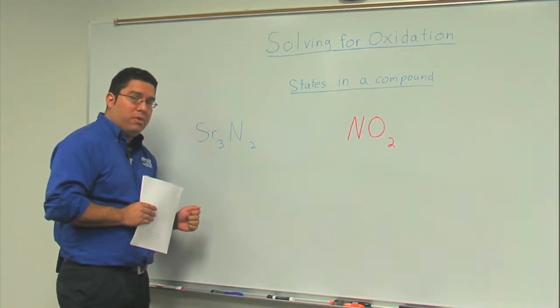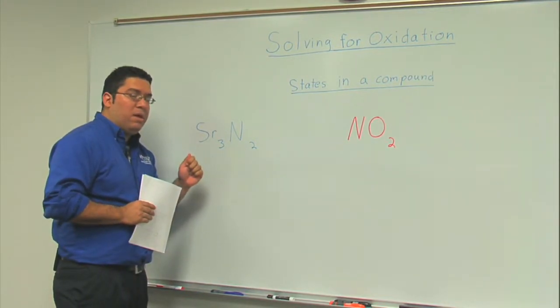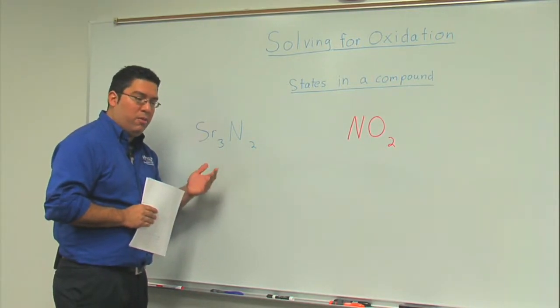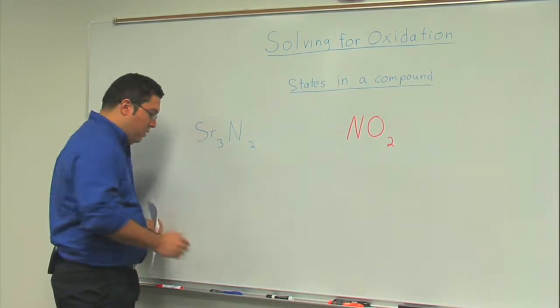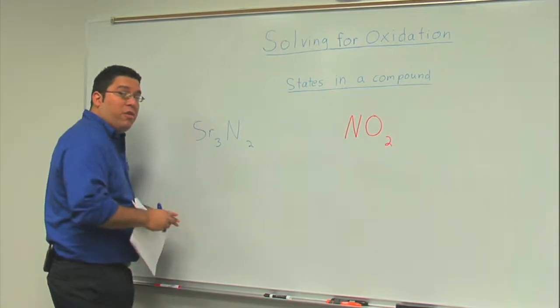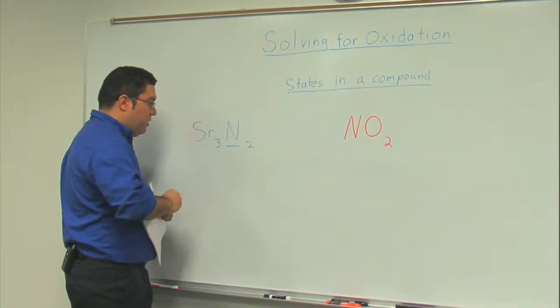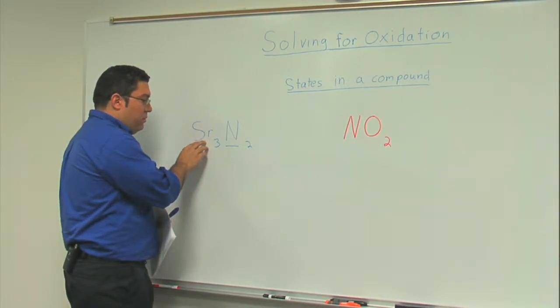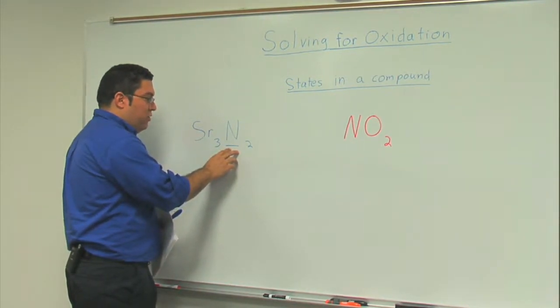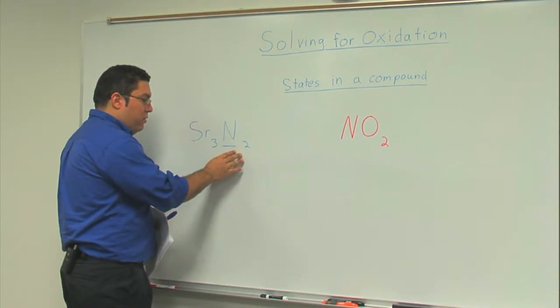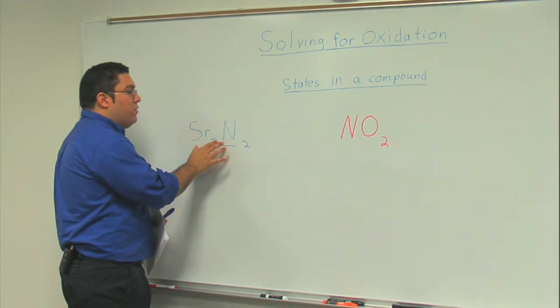If it's an ionic compound, it's not very difficult to predict the charges. You can simply look at the periodic table and identify the charges. Here we have a metal strontium and a non-metal nitrogen - strontium nitride. We can clearly see that we have a metal and non-metal, so we have an ionic compound.